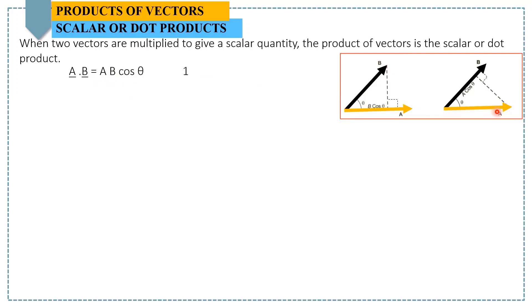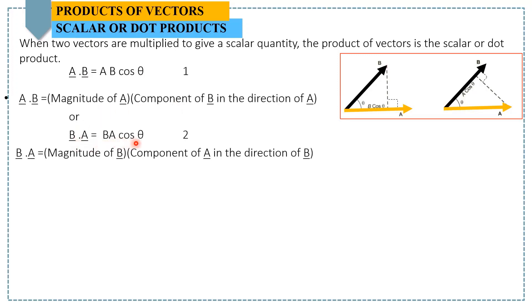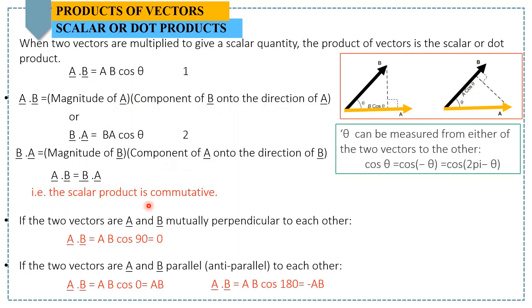In the second figure, we take the projection of vector a in the direction of vector b. For this case, b dot a equals b times a times cosine of theta. In the first case we have the magnitude of a and a component of b in the direction of a; in the second case, the magnitude of b and a component of a in the direction of b. Either way, we get the same answer, so the scalar product is commutative.